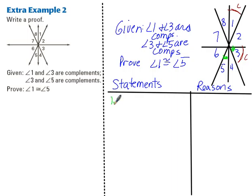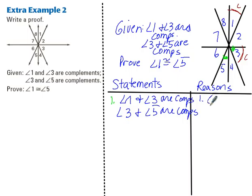So let's write the given. Angle 1 and angle 3 are complements. Angle 3 and angle 5 are complements. And that's our given.